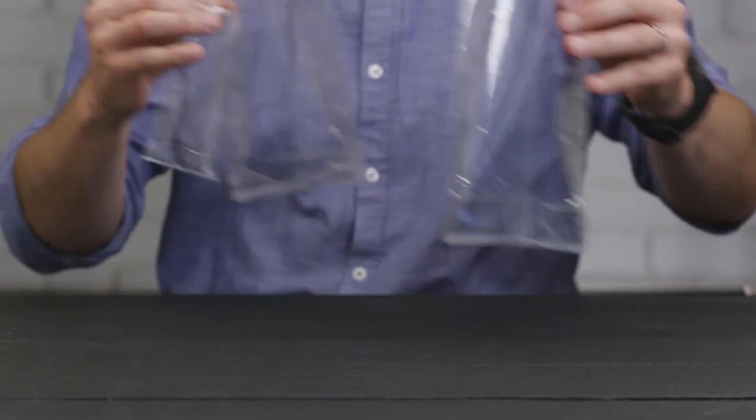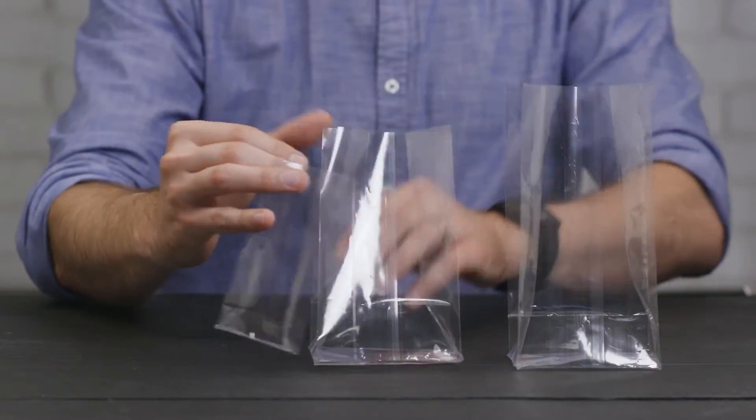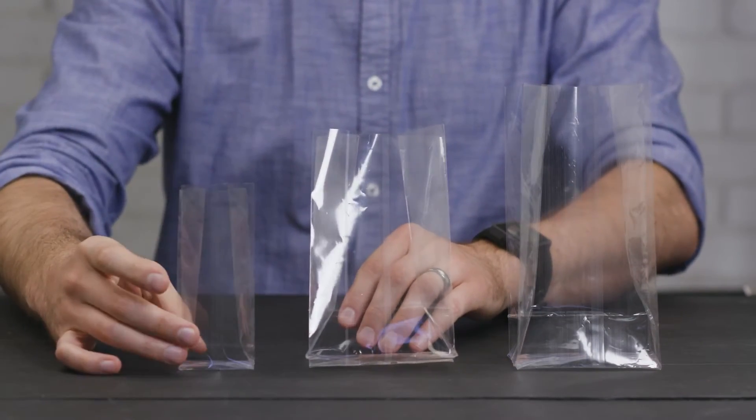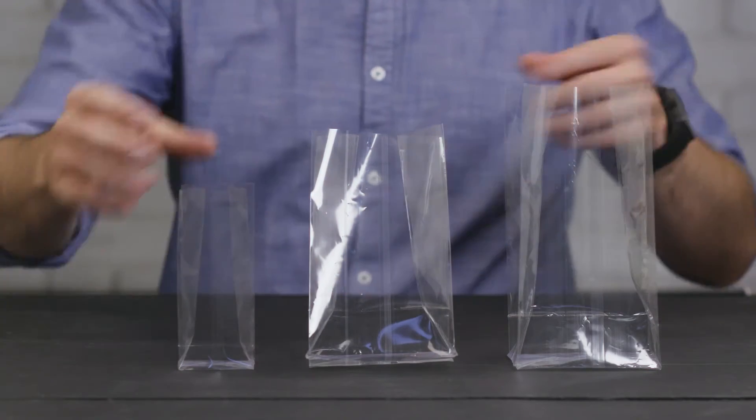At Clear Bags, we know that earth-friendly packaging is important, which is why we also carry a complete line of EcoClear flat bottom gussets that are made from plants and are certified compostable.